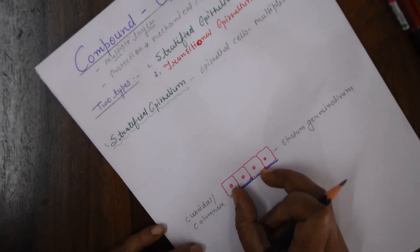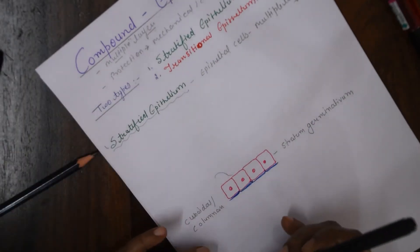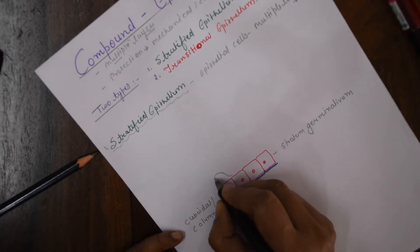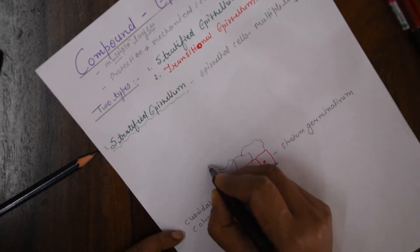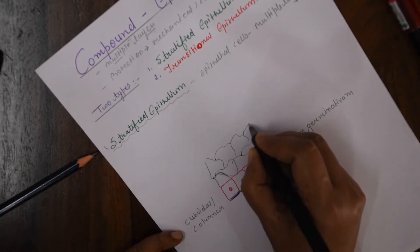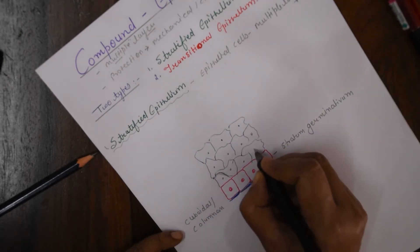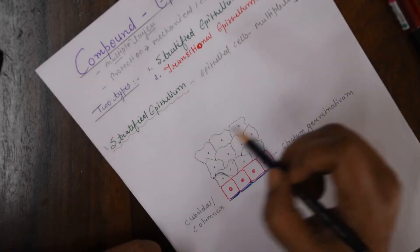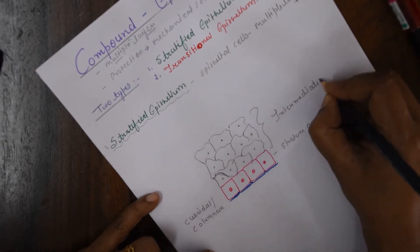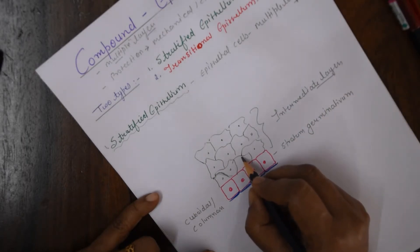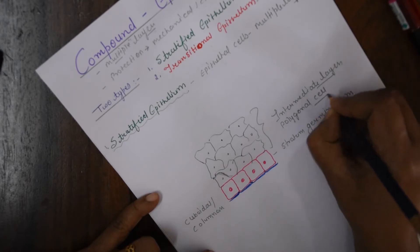They divide mitotically and the cells grow in an outward direction. Above the stratum germinativum, there are layers of polygonal-shaped cells, and these cells collectively form a layer called the intermediate layer.